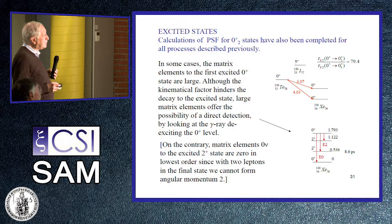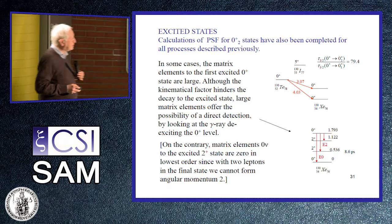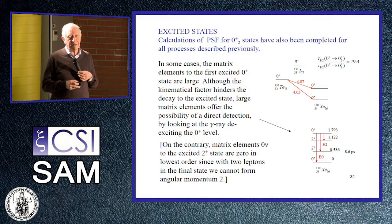Experimentalists are interested in this because they can look at gamma rays coming out from the decay of the excited state. Looking at gamma rays is a very sensitive test — as we know from recent LHC results, there is a new result of a mass of about 750 MeV obtained by analyzing the spectrum of two gammas, very recent and still not confirmed.